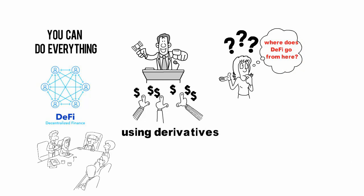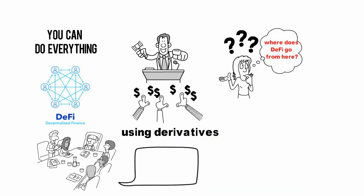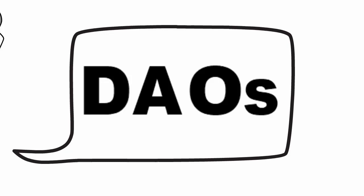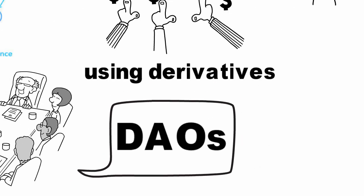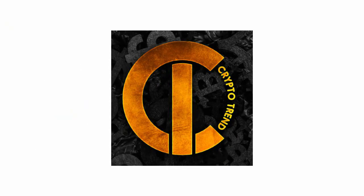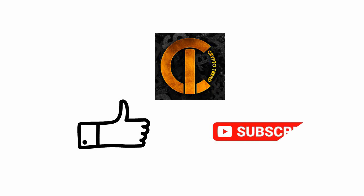So where does DeFi go from here? Systems that allow borrowers to access DeFi tools similar to credit scores, but that also maintain privacy. There are also prospects of blockchain-based decentralized autonomous organizations, known as DAOs. These can be set up to run DeFi apps governed through stakeholder votes. The future definitely looks bright — let us know what you think about DeFi in the comments, and don't forget to like and subscribe.